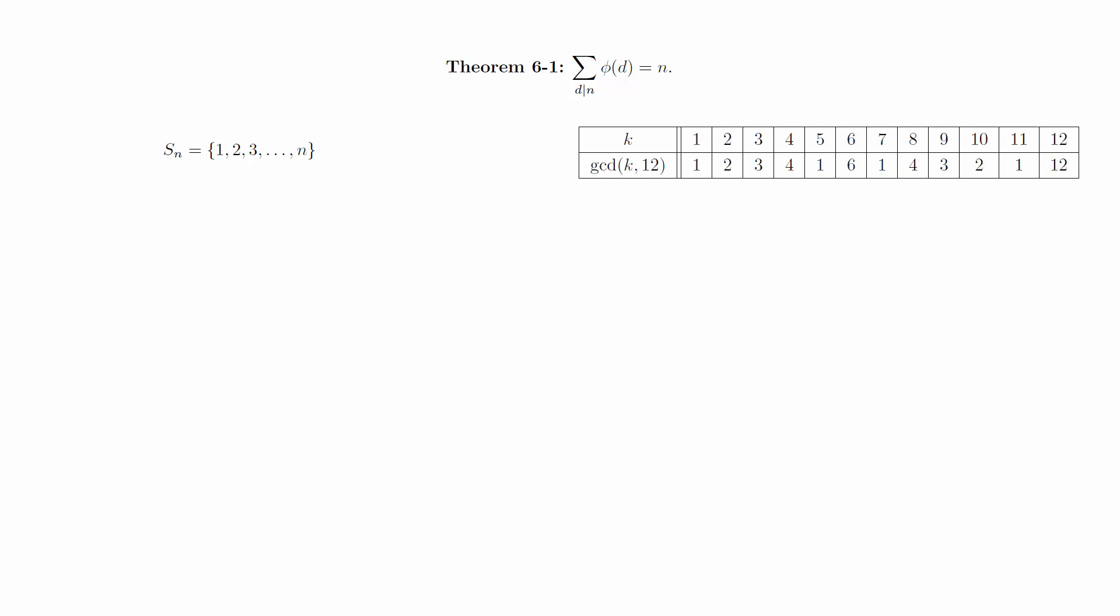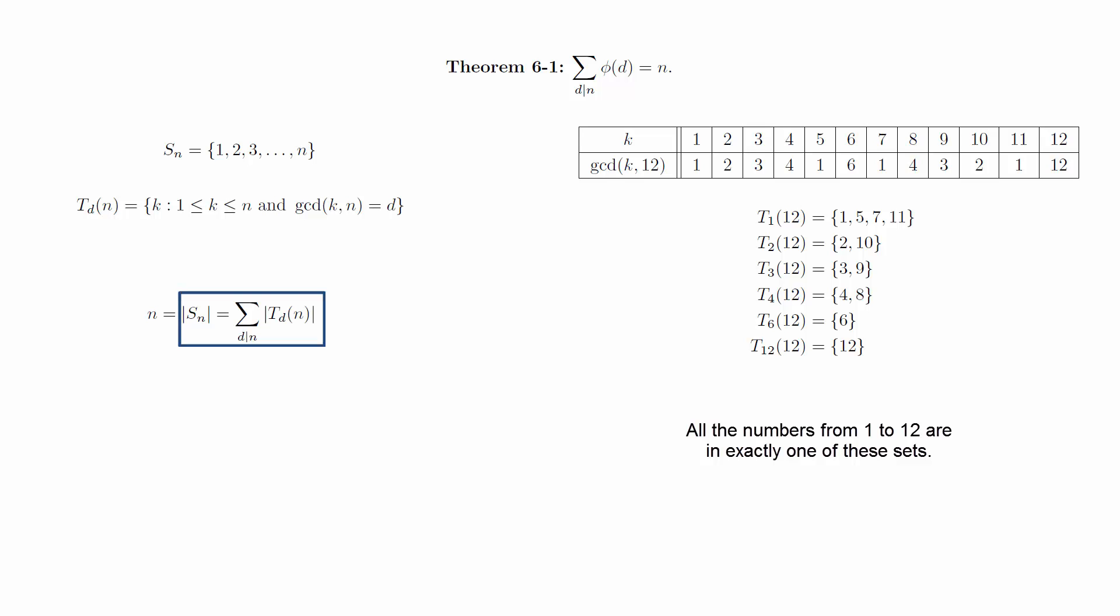Here's what it looks like for n equals 12. We will group each of these elements together based on these values, and let T sub d of n be the set of elements whose greatest common divisor with n is d. In general, we're just taking the elements of S of n and putting them into groups. Therefore, this equation must be true.